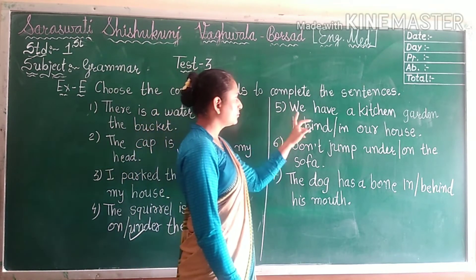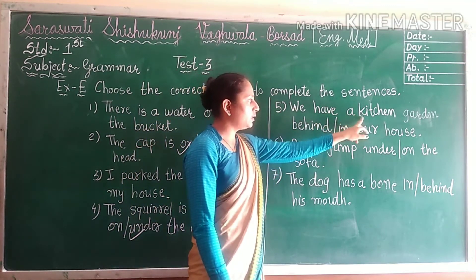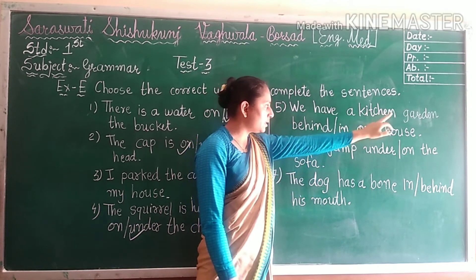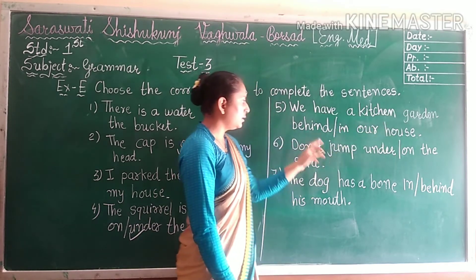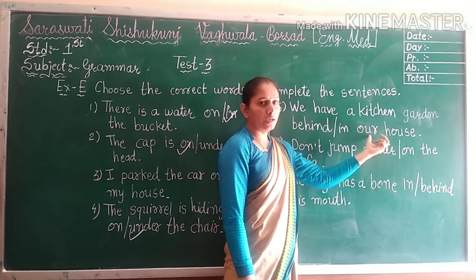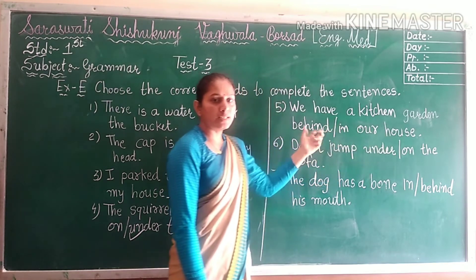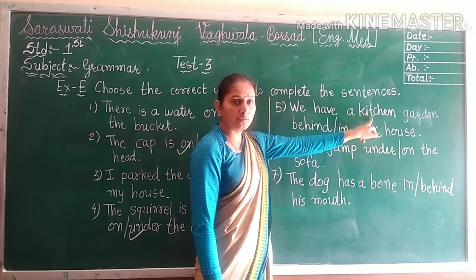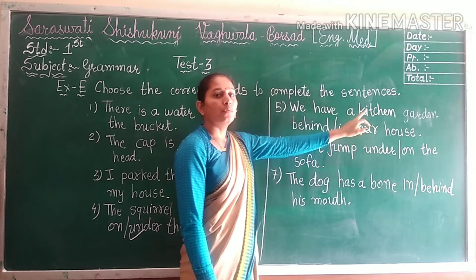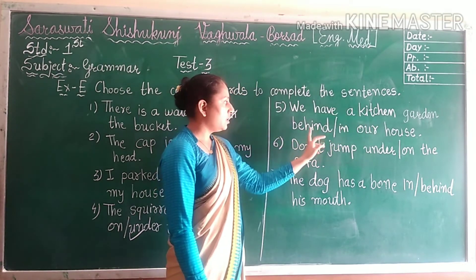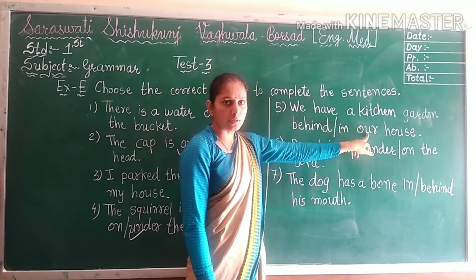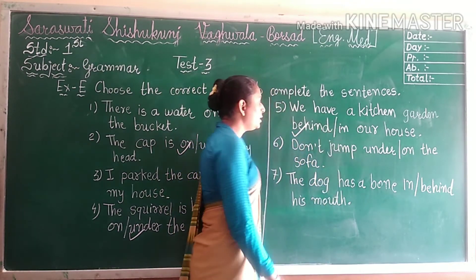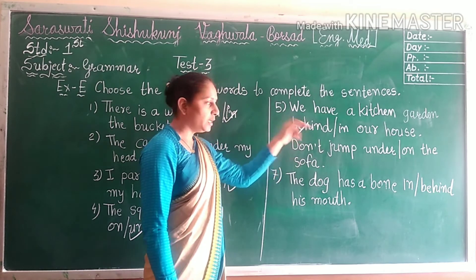Fifth number. We have a kitchen garden — blank — our house. We can already see the kitchen of our house, but the kitchen garden — where can we see it? Behind our house. So our answer is BEHIND. B-E-H-I-N-D. Behind.